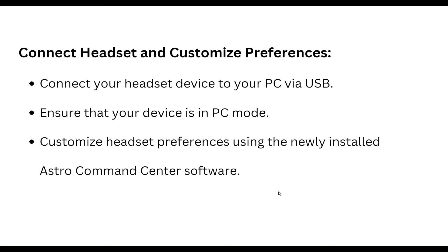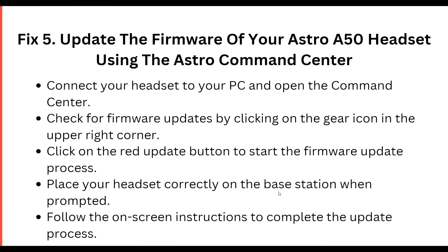Our fifth step is to update the firmware of your Astro headset using the Astro Command Center. Connect your headset to your PC and open the Command Center. Check for firmware updates by clicking the gear icon in the upper right corner. Click on the red 'Update' button to start the firmware update process. Place your headset correctly on the base station when prompted and follow the on-screen instructions to complete the update.